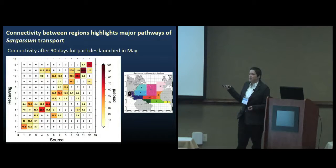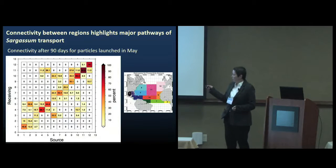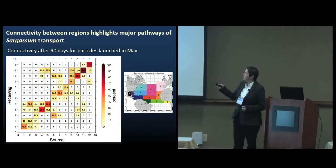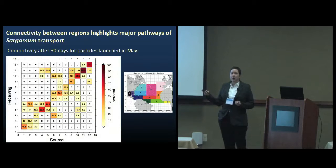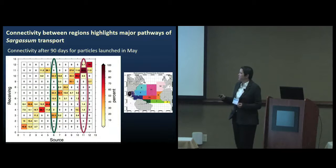I densely initialized particles in those regions and then just tracked where they ended up at different timescales. In this matrix, the x-axis is the source regions numbered according to this figure, and the y-axis are the receiving regions. After 90 days, particles start in the source region, end up in the receiving region. They're colored by the percent of particles, so it's all normalized to the number of particles that were initialized in a given subregion. The diagonal here is retention within a region.